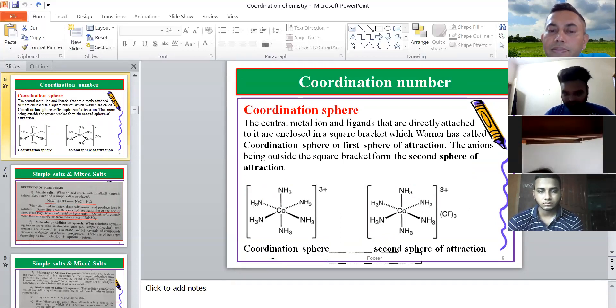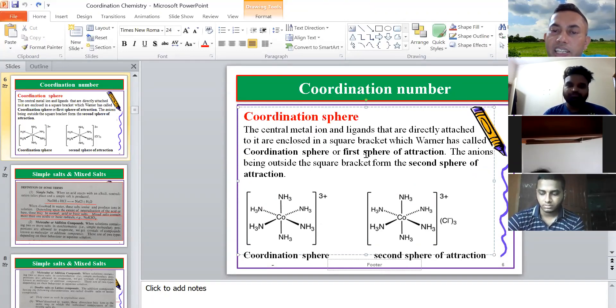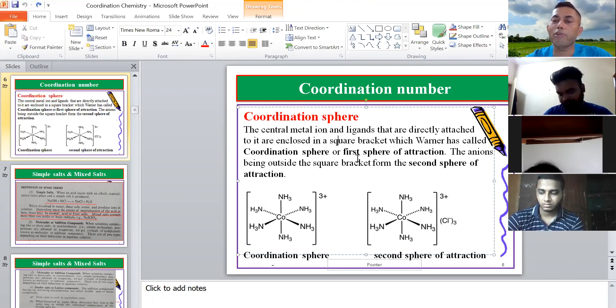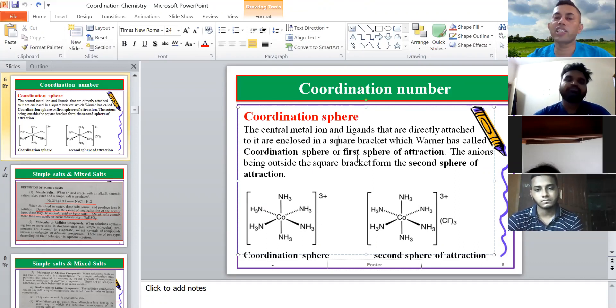First sphere of attraction. The name of the coordination sphere is the name of the first sphere of attraction. The second sphere of attraction. When you have first sphere, you have to put the second sphere of attraction. The coordination sphere is the first sphere of attraction.